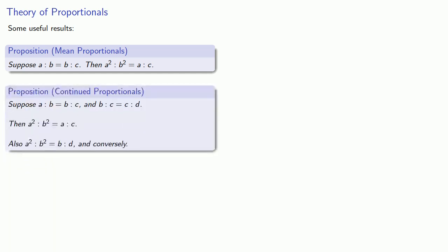And we can extend this idea to get what's called a continued proportional. Suppose a is to b as b is to c, and b is to c as c is to d. Then a² is to b² as a is to c. And we can also show that a² is to b² as b is to d, and all of this holds conversely.